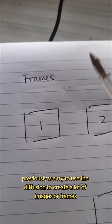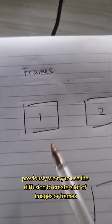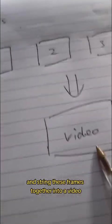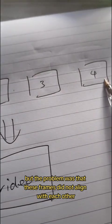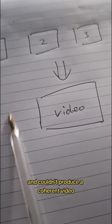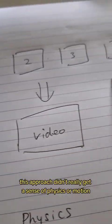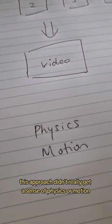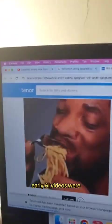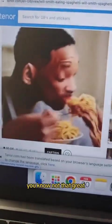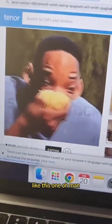Previously, we tried to use diffusion to create a lot of images or frames and string these frames together into a video. But the problem was that these frames did not align with each other and couldn't produce a coherent video. This approach didn't really get a sense of physics or motion, which is why back then, early AI videos were not that great like this one. Oh man.